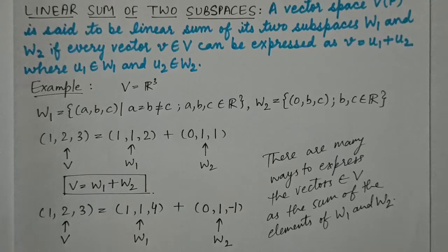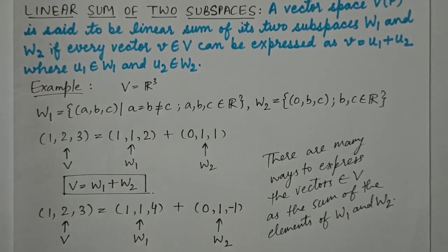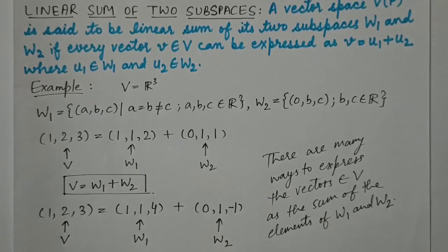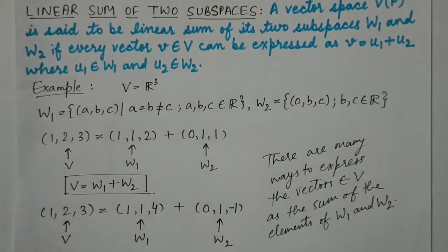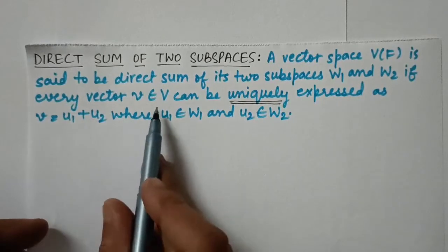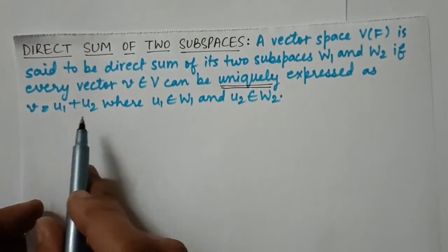In the case of linear sum, there are infinitely many ways to express every vector belonging to V as the sum of elements from the subspaces. But in the case of direct sum, there is only one unique way to express a vector of V as the sum of elements belonging to the subspaces.